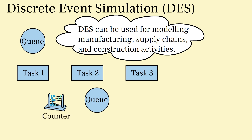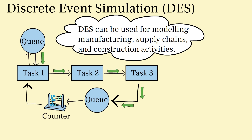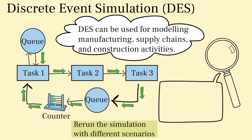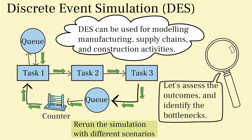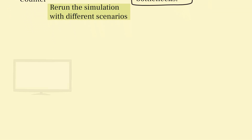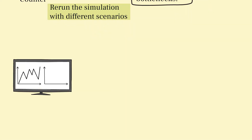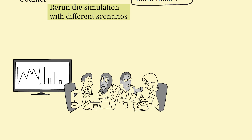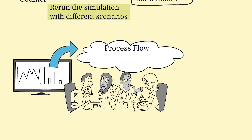In discrete event simulation, we break the project down into individual events or activities and define their logical relationships. By simulating the timing and interactions of these events, we can evaluate different scenarios and identify potential bottlenecks, resource constraints, or scheduling issues. By examining the simulation results, we gain insights into the project's flow, resource utilization, and potential risks.